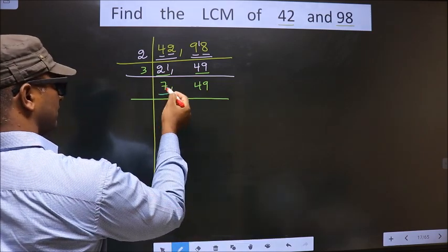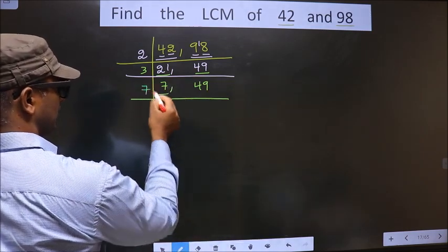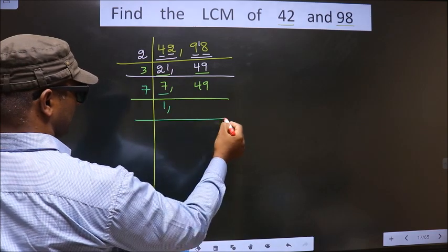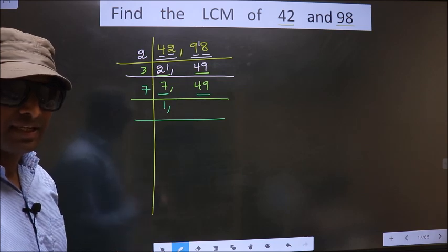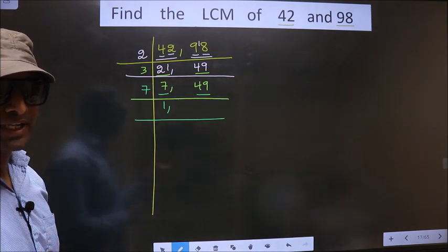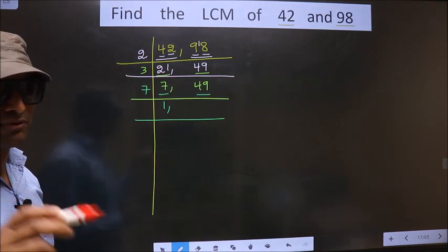Now here we have 7. 7 is a prime number, so we take 7 once. The other number is 49. Always remember, 7 squared is 49. That is, 7 times 7 is 49.